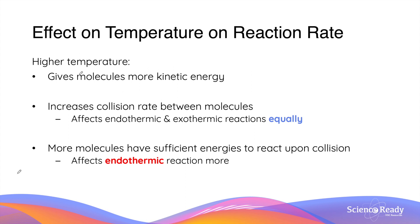For example, at a higher temperature, by giving molecules more kinetic energy, the rate of collision between them is increased, which in turn increases the reaction rates. It's important to remember that this effect on collision rates affects the rates of forward and reverse reactions equally — in other words, it affects the endothermic and the exothermic reactions equally.